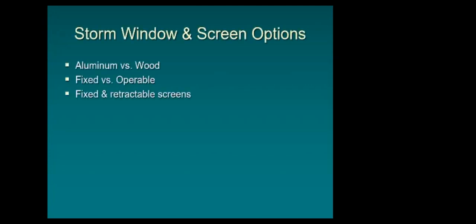Aluminum and wood storm window options are available — fixed versions are less expensive, operable versions offer more flexibility, with various screen types installed by clips for seasonal removal or in a track to remain in the opening. Triple-track aluminum storms, which keep screens always in the opening, tend to leak more air and be problematic for efficiency.